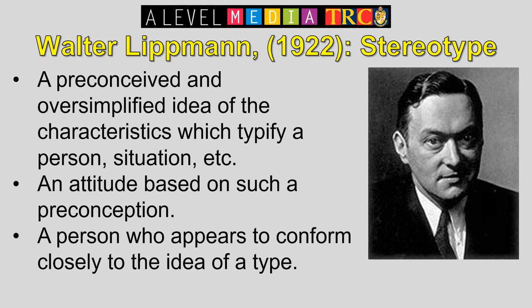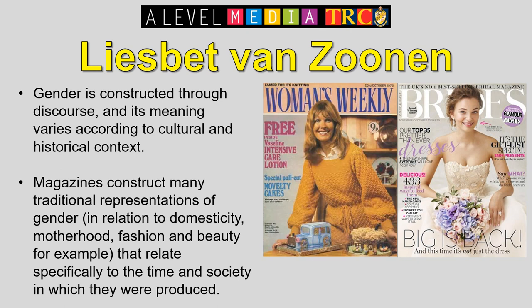Van Zoonen says gender is constructed through discourse, and its meaning varies according to cultural and historical contexts. For example, if we look at magazines, they construct many traditional representations of gender. When we think of traditional, stereotypical feminine behaviours, we think of domesticity — the domestic sphere, cooking, cleaning, looking after the children. The idea of motherhood — being a nurturing caregiver to children and husband. Women should be interested in fashion and beauty. These are key stereotypical traits of femininity.